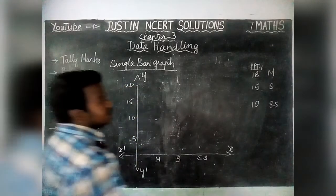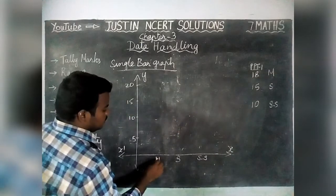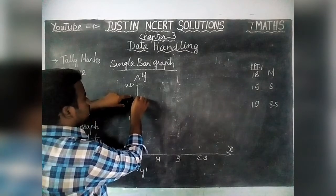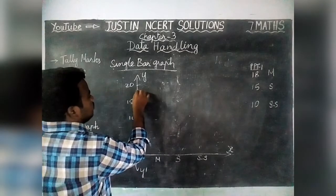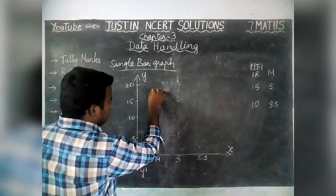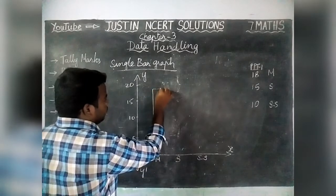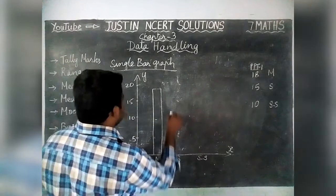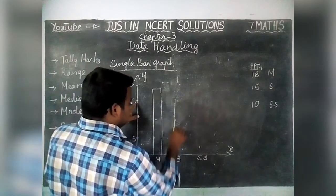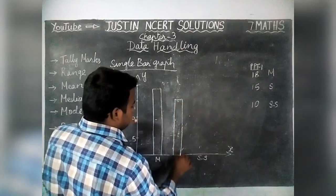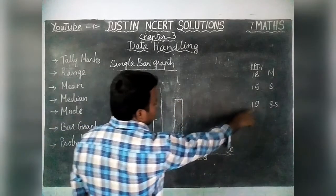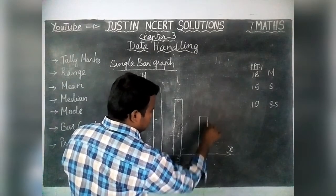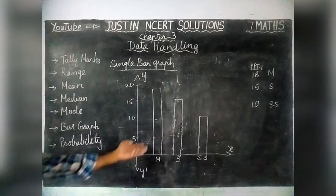Now we are going to draw it. Maths mark is 18, so for the subject maths we draw up to 18 — 15 is here, then 16, 17, 18. Science is 15 marks, so we draw up to 15. Social Science is 10 marks. We have drawn it like this. This is a single bar graph.